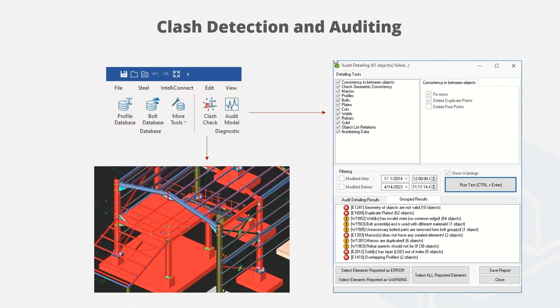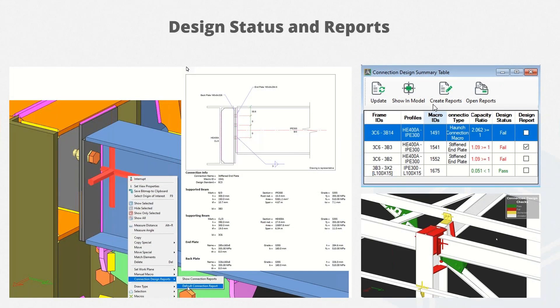You can use audit model to check for any geometrical issues. For instance, in this case, we have some overlapping profiles and duplicate plates that we need to correct. Once you select a connection, you can click on the connection icon to easily create a design report regarding the selected code. We have really detailed reports, and you can see all connection statuses in the summary table. If you want, you can also colorize them in a 3D view.